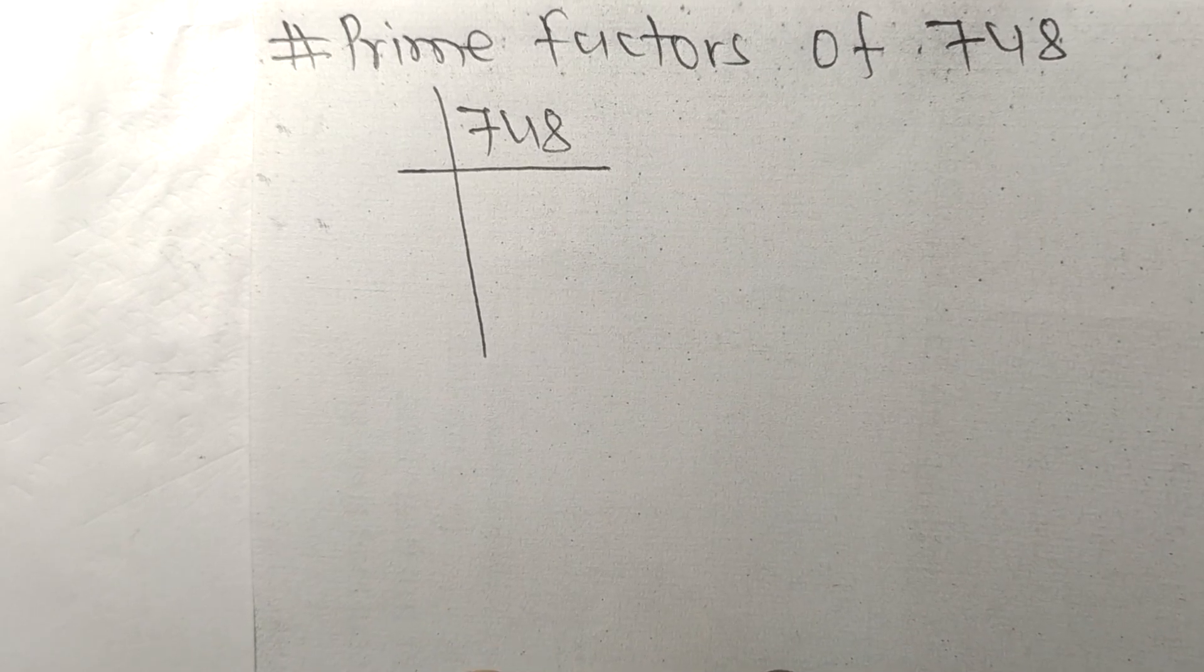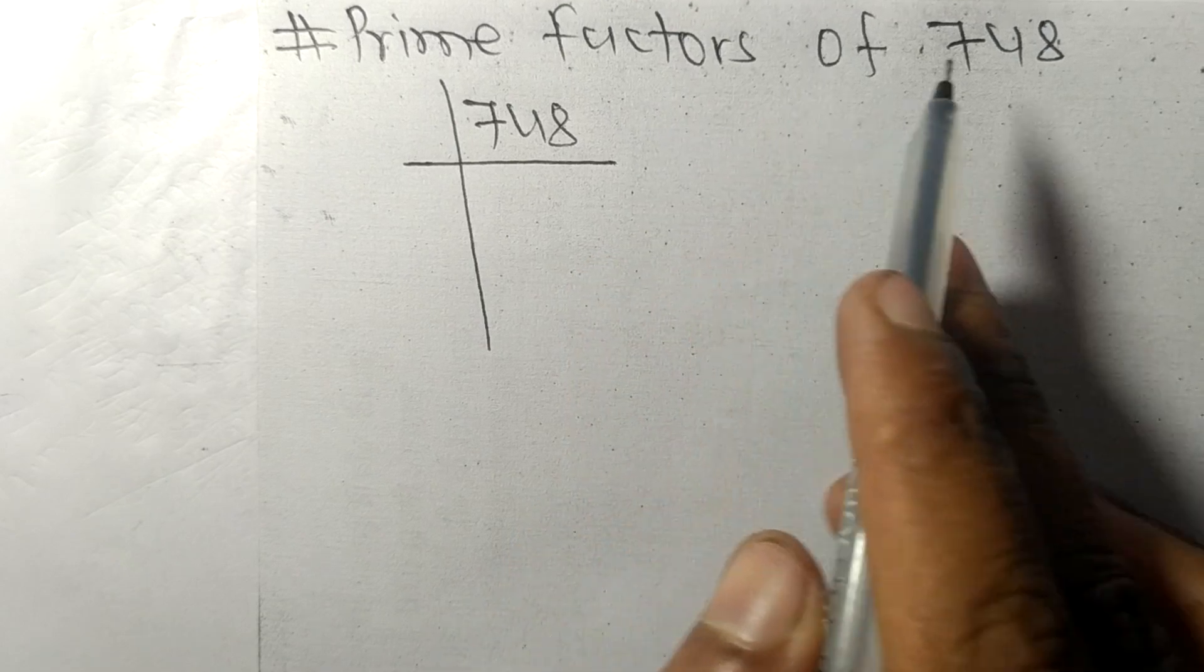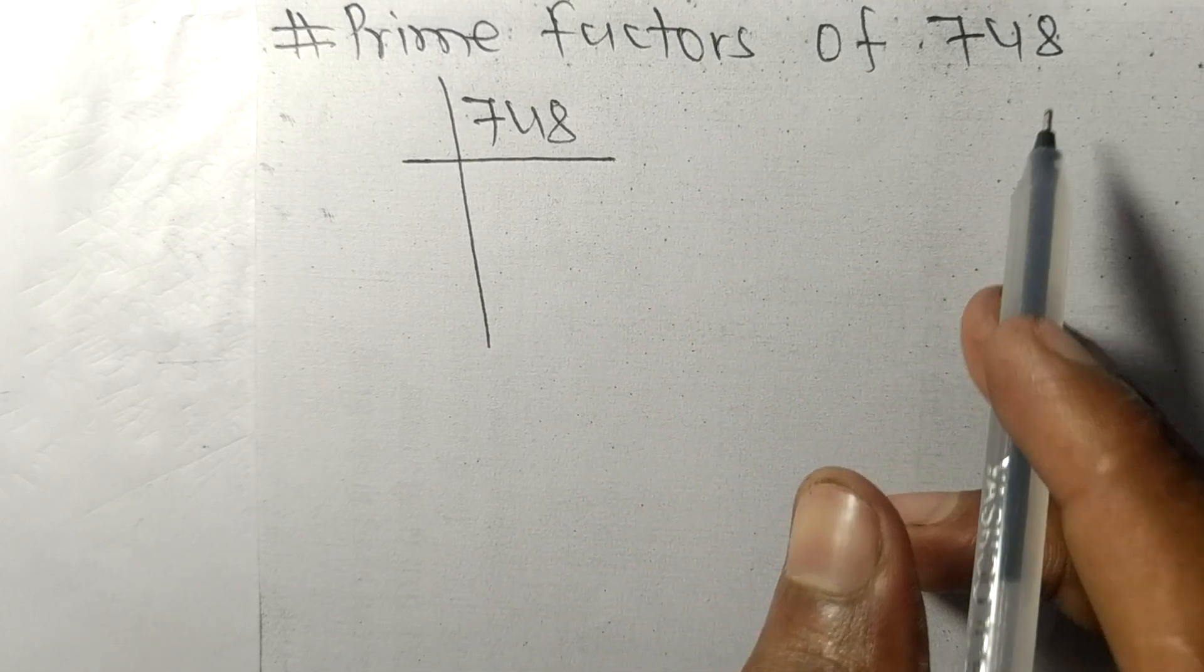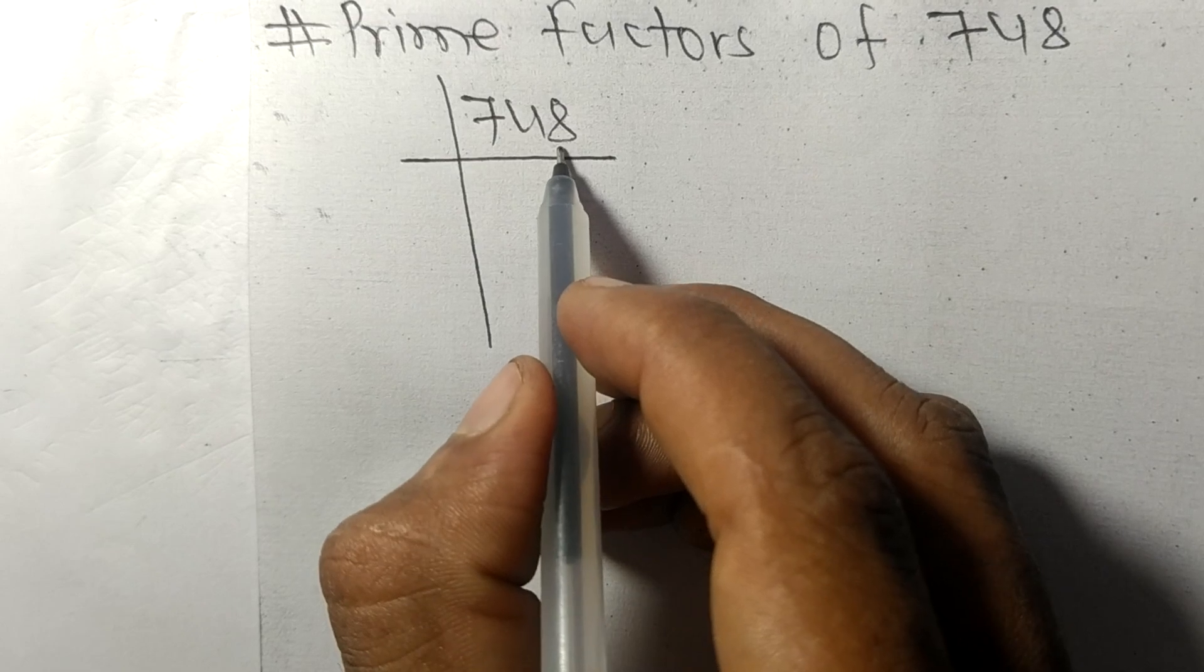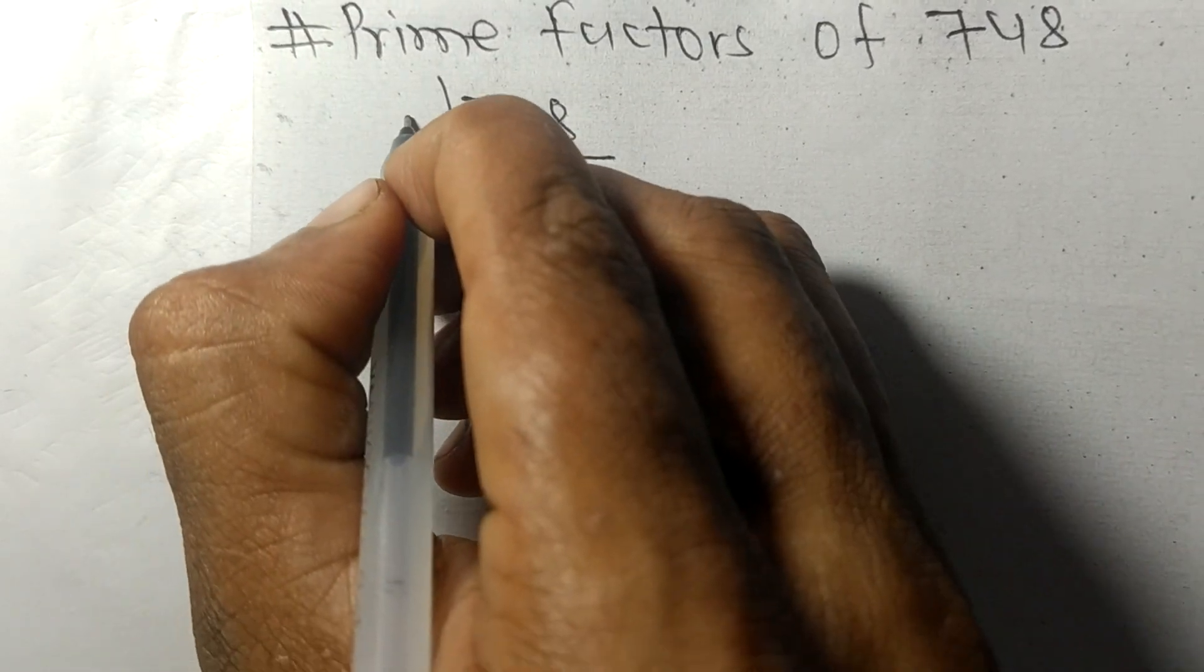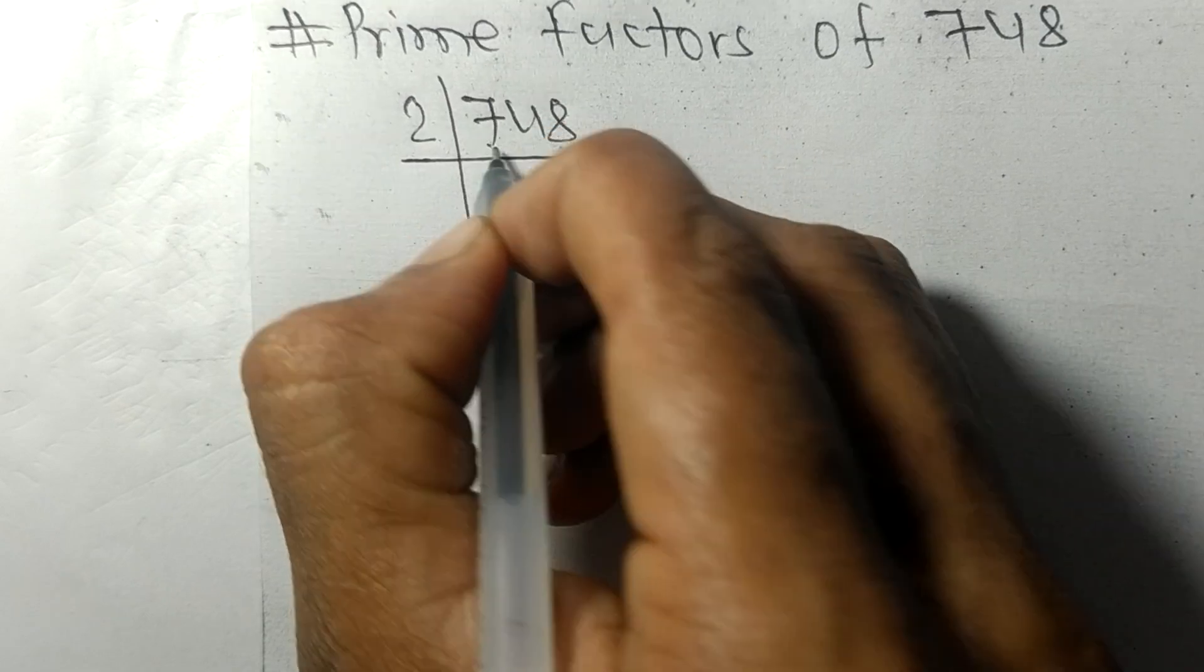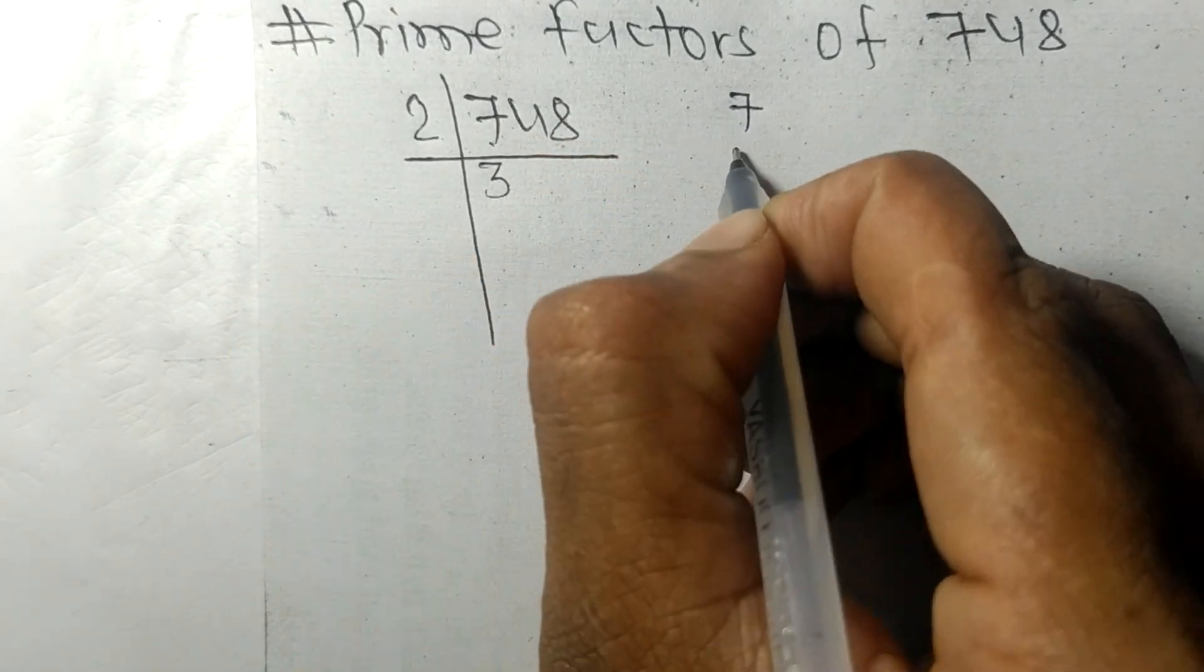Today in this video we shall learn to find the prime factors of 748. At last it contains an even number 8, so this whole number is divisible by 2. First we have 7, so 2 times 3...